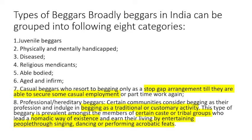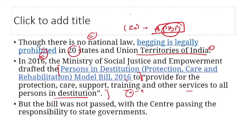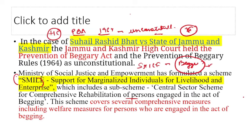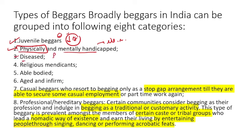Types of beggars: Juvenile beggars are those below 18 years of age involved in begging. Physically and mentally handicapped beggars include those who are mentally ill, unstable, or physically disabled. Disease beggars are those suffering from conditions like leprosy. Religious mendicants are saints and spiritual figures who beg on religious grounds.